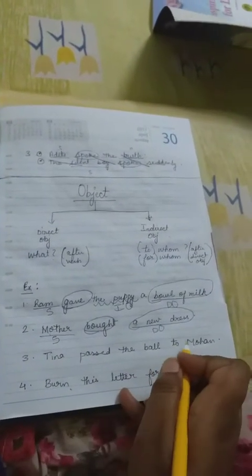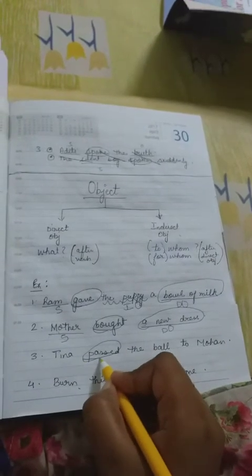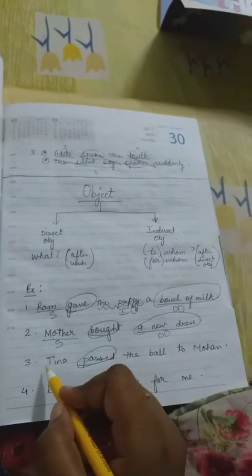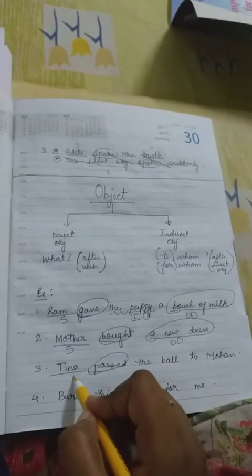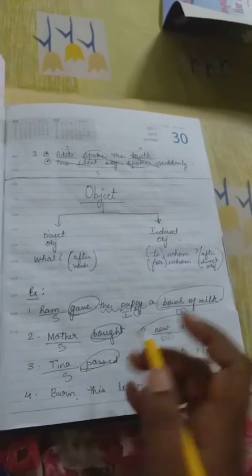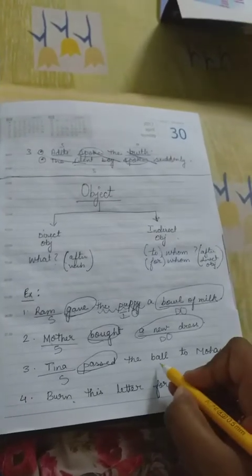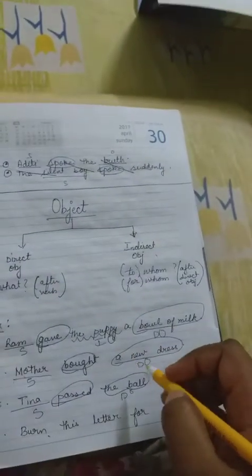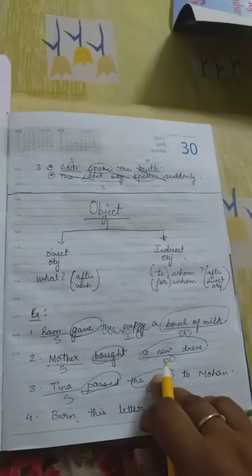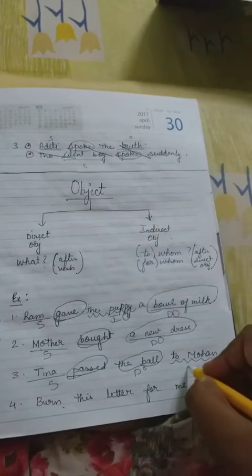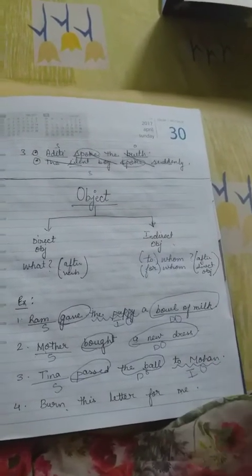Next: Tina passed the ball to Mohan. The verb is 'passed' and the subject is Tina. Tina passed what? The ball — so 'the ball' is the direct object. And to whom? To Mohan — so 'Mohan' is the indirect object.